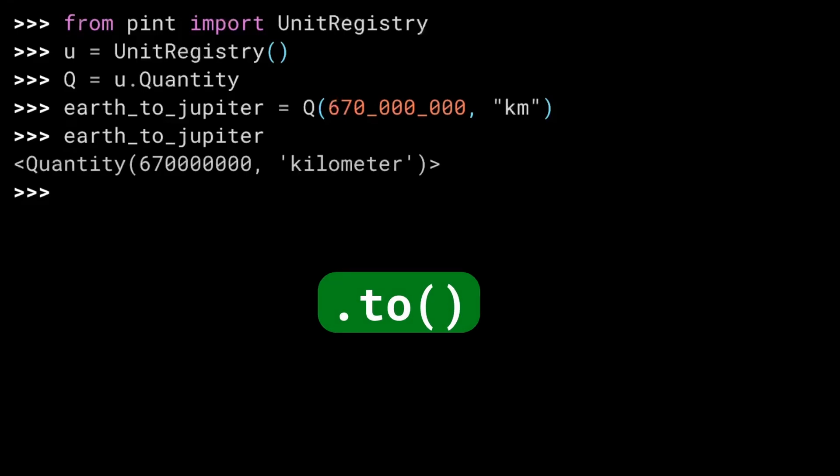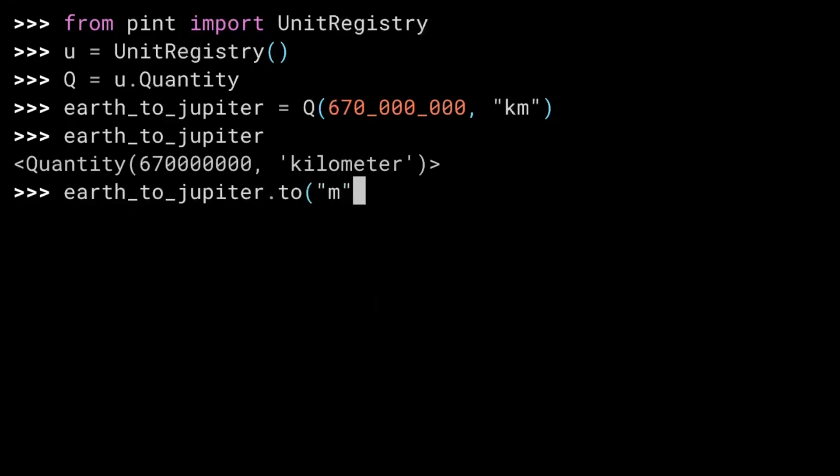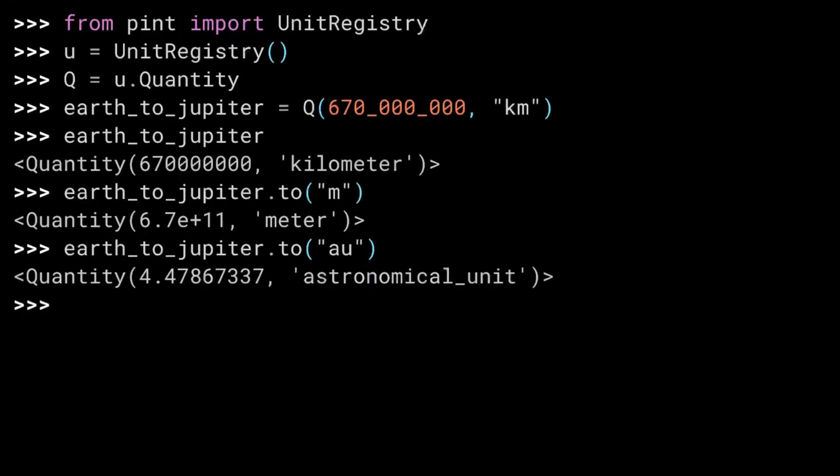The to method on a quantity allows you to convert to other units. Let's convert kilometers to meters. You probably could have done that one in your head. Multiplying by a thousand isn't too rough. How about something fancier? An astronomical unit is a value based on the average distance of the Earth from the Sun. So by definition, the Earth is 1 AU from the Sun, which is almost 150 million kilometers. Jupiter is almost 4 and a half times further from the Earth than the Earth is from the Sun, making it about 5.5 AU relative to the Sun. That distance seems an awful lot shorter in light years.